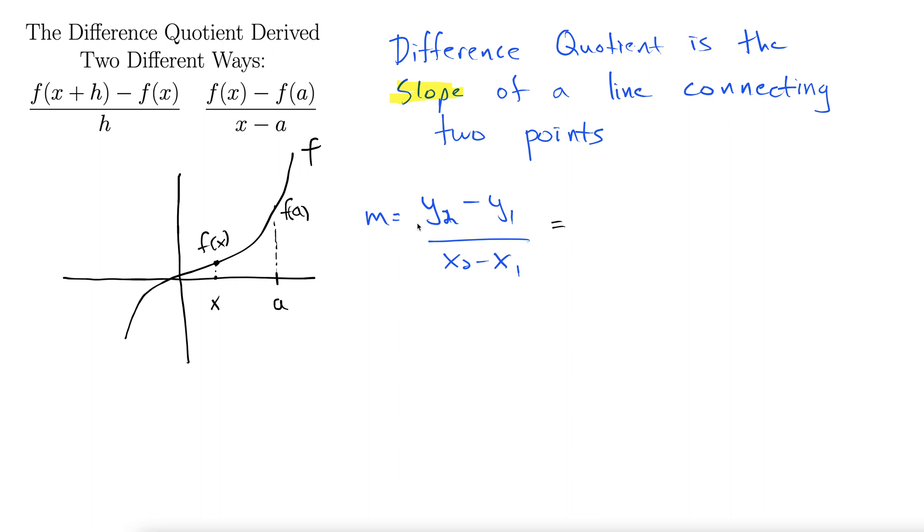Here we are again. It's just rise over run. Same algebraic formula. We're going to have here a line connecting these two points and we're interested in the slope of this line. It's always just the slope. So y2 in this case will be f of a minus y1, which will be f of x, all over a minus x.